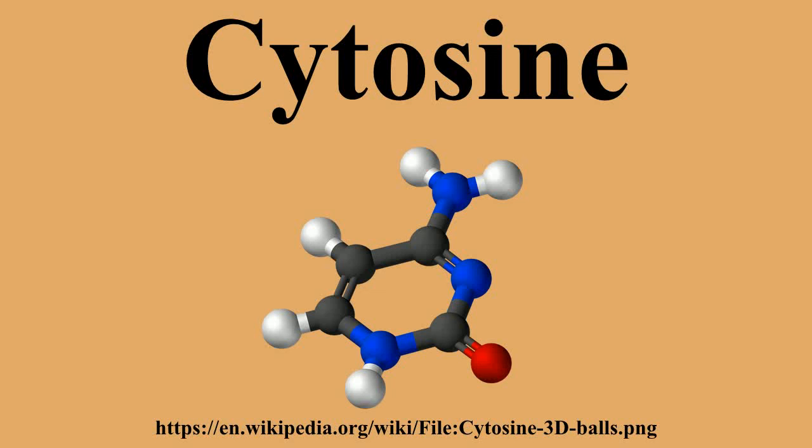Cytosine was discovered and named by Albrecht Kossel and Albert Neumann in 1894 when it was hydrolyzed from calf thymus tissues. A structure was proposed in 1903, and was synthesized in the laboratory in the same year.